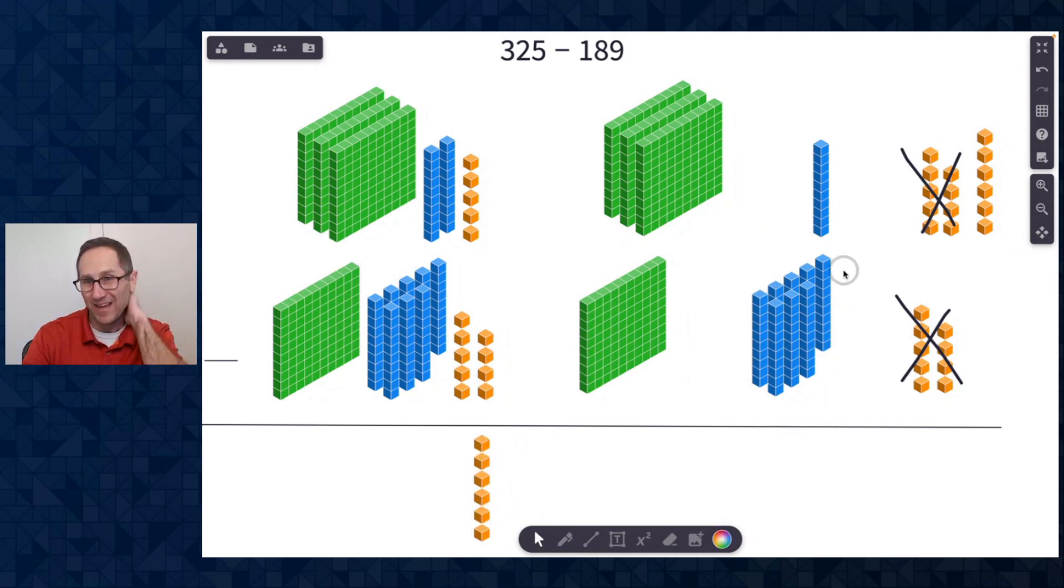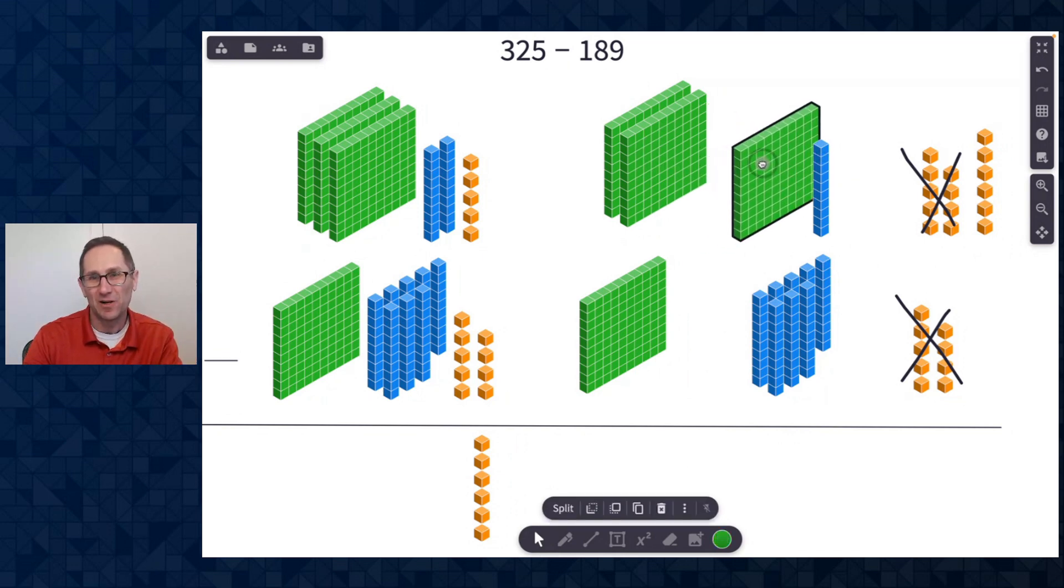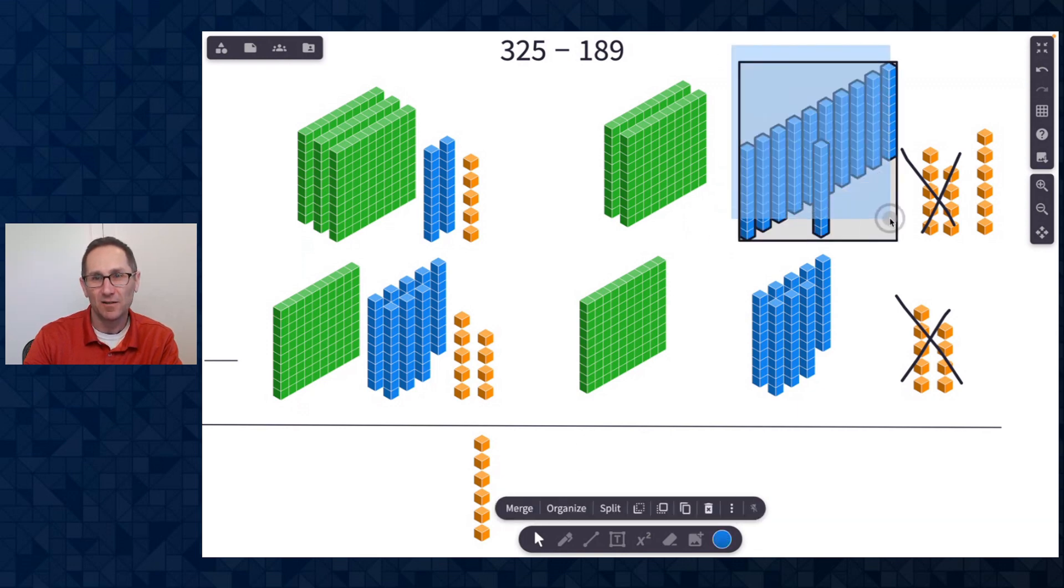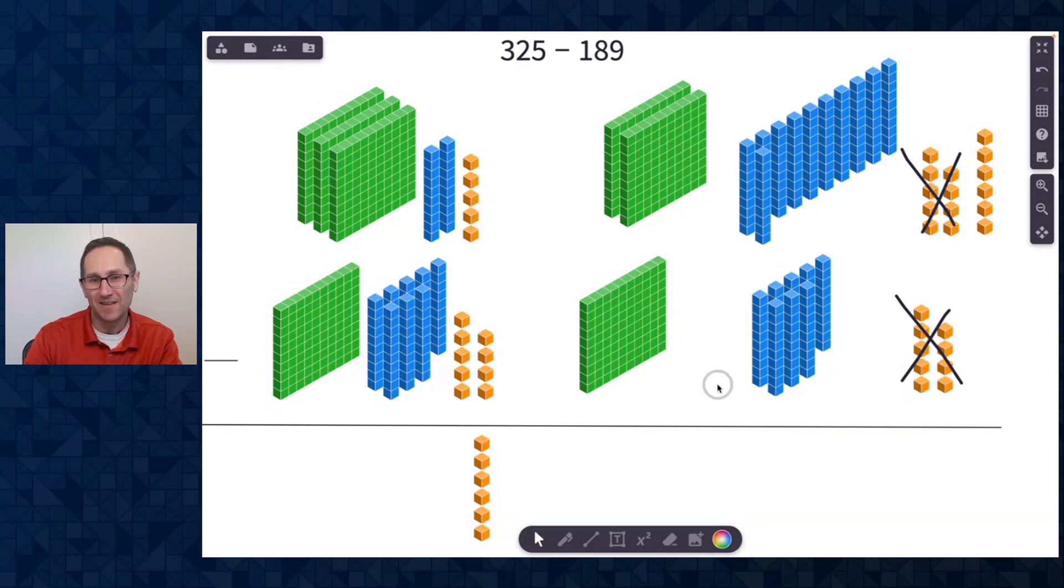Now I have eight tens here. I need to take eight away from that single 10, which I can't. So I'll move over a hundred block and split it. Maybe select all of these to organize it a little bit. I have eight that I have to take away. I could keep track of that with my pen tool.